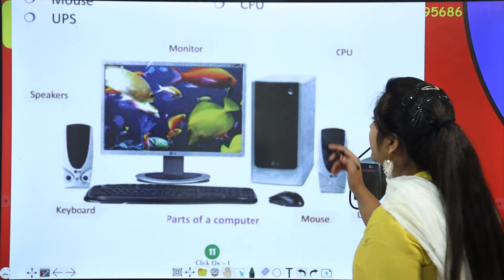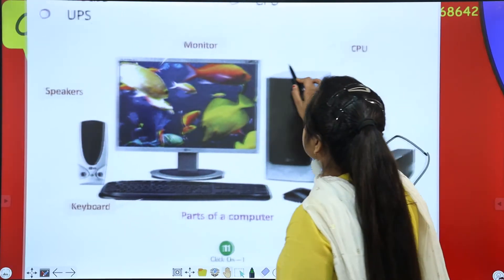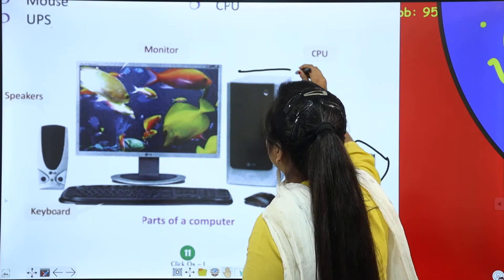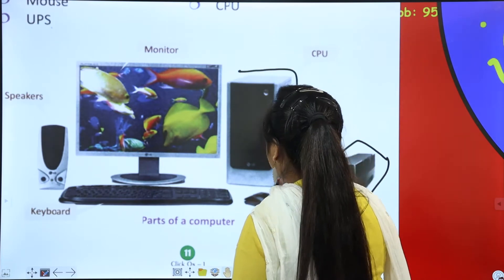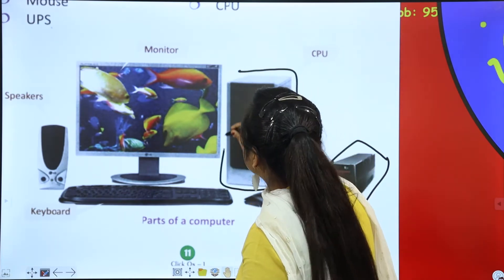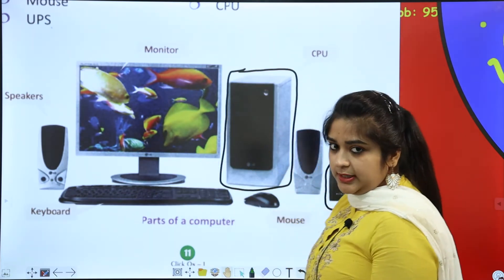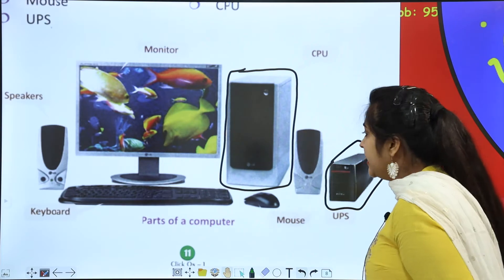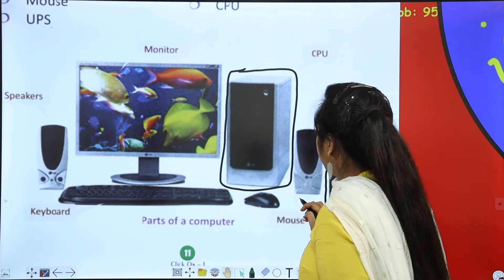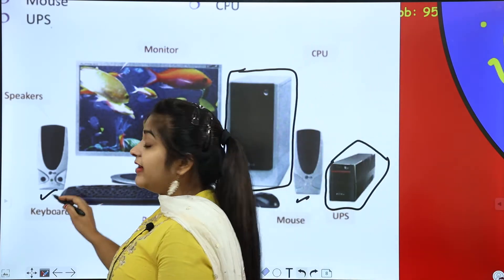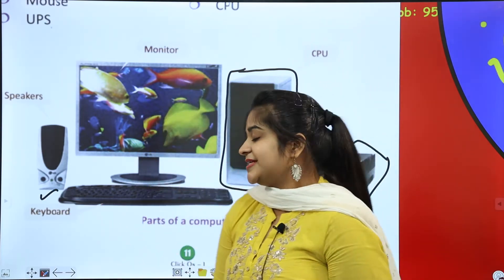After that, the big box is called CPU — Central Processing Unit. Then there are two speakers; when the music is running, the sound comes through the speakers.